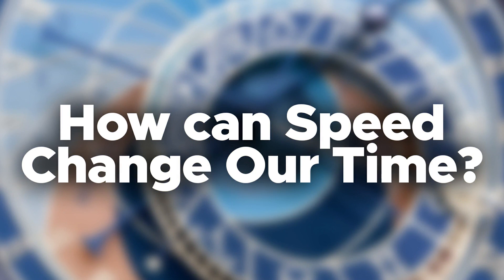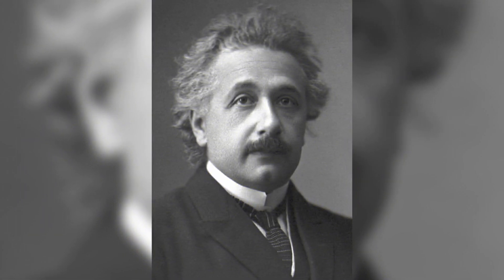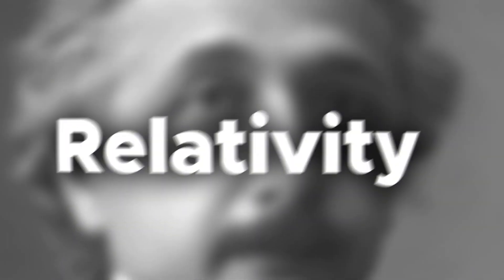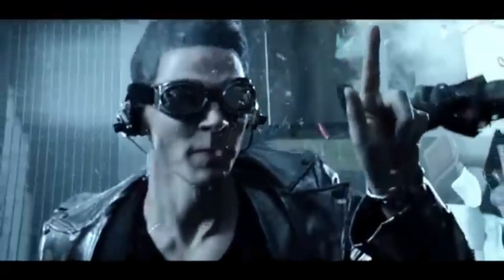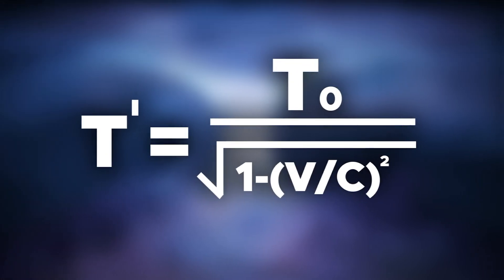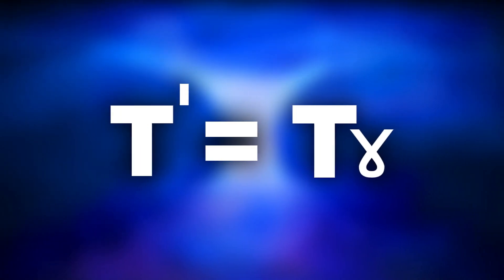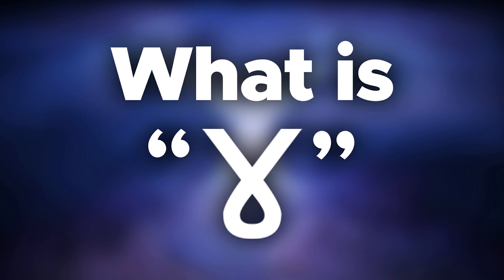First, how can speed change our time? In 1905, Sir Albert Einstein introduced a new theory that changed the whole world — that is relativity. In special relativity, a person who has a velocity will spend less time than a stable person. The formula is: t' = t₀ × √(1 − v²/c²), which equals t × gamma, where gamma is the Lorentz factor.